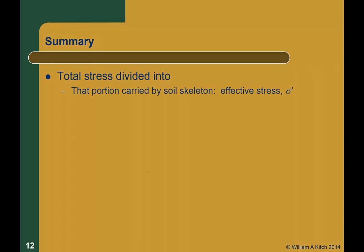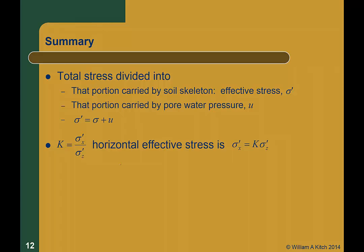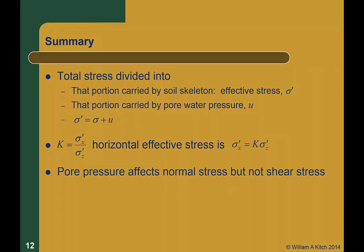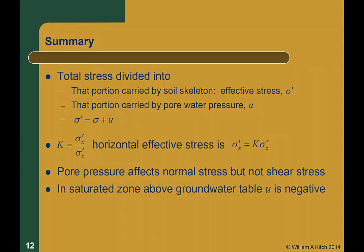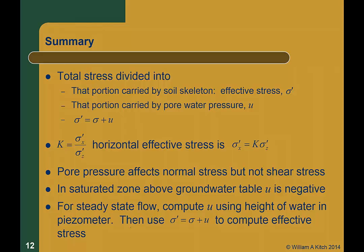So let's review. Total stress is divided into effective stress — that portion carried by the soil skeleton — and pore pressure, which is carried by the pore water. The fundamental equation is: effective stress equals total stress minus pore water pressure. Memorize it. The coefficient of lateral earth pressure is the ratio of effective horizontal stress to effective vertical stress, and we compute effective horizontal stress as K times the effective vertical stress. The pore pressure affects normal stresses, but not shear stresses. In the saturated capillary zone above the ground water table, the pore pressure is negative — all the fundamental equations apply, you just need to make sure you properly compute the pore pressure. Use Kitsch's rule to compute effective stress under steady state flow conditions: stick a piezometer in, compute the pore pressure from the height of the water, then compute effective stress as sigma minus u.